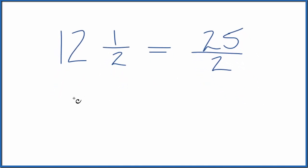We can check this as well. We could take 25 over 2, our improper fraction, and change it back to a mixed number.